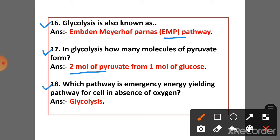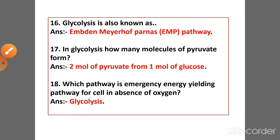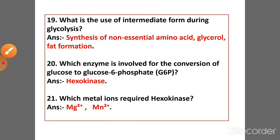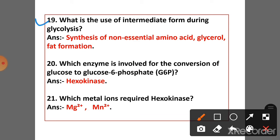Question 18: Which pathway is the emergency energy-yielding pathway related to glycolysis? Question 19: What is the use of intermediates formed during glycolysis? Answer: Synthesis of non-essential amino acids, and glycerol and fat formation.